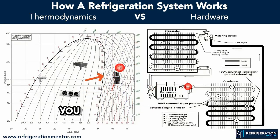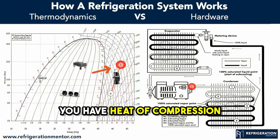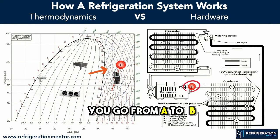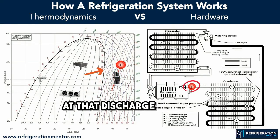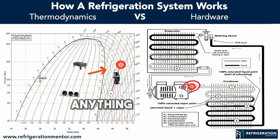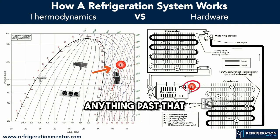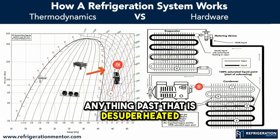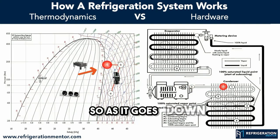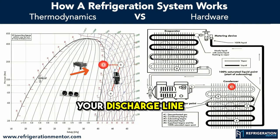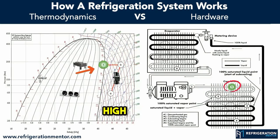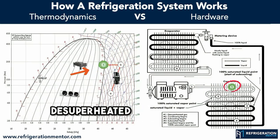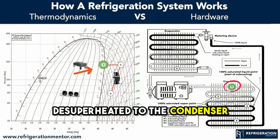As that compressor starts up, you have heat of compression — you go from A to B. At that discharge port, that's the hottest point. Anything past that is desuperheated. So as it goes down your discharge line, it's desuperheated — high pressure, high temperature gas — desuperheated to the condenser.